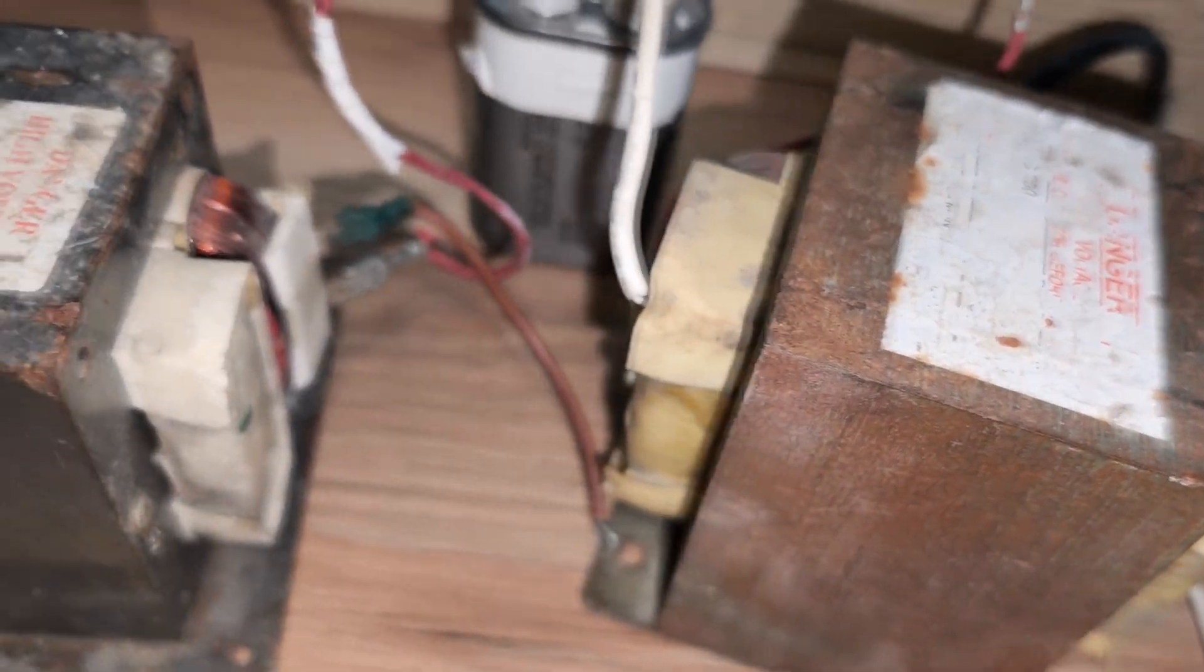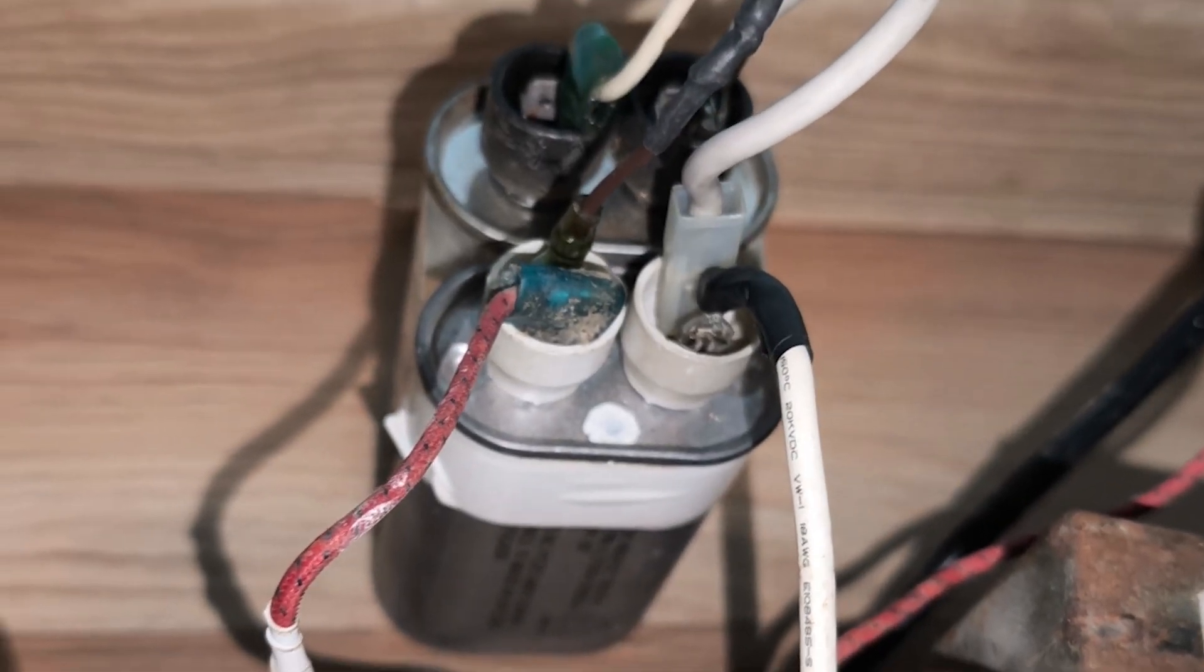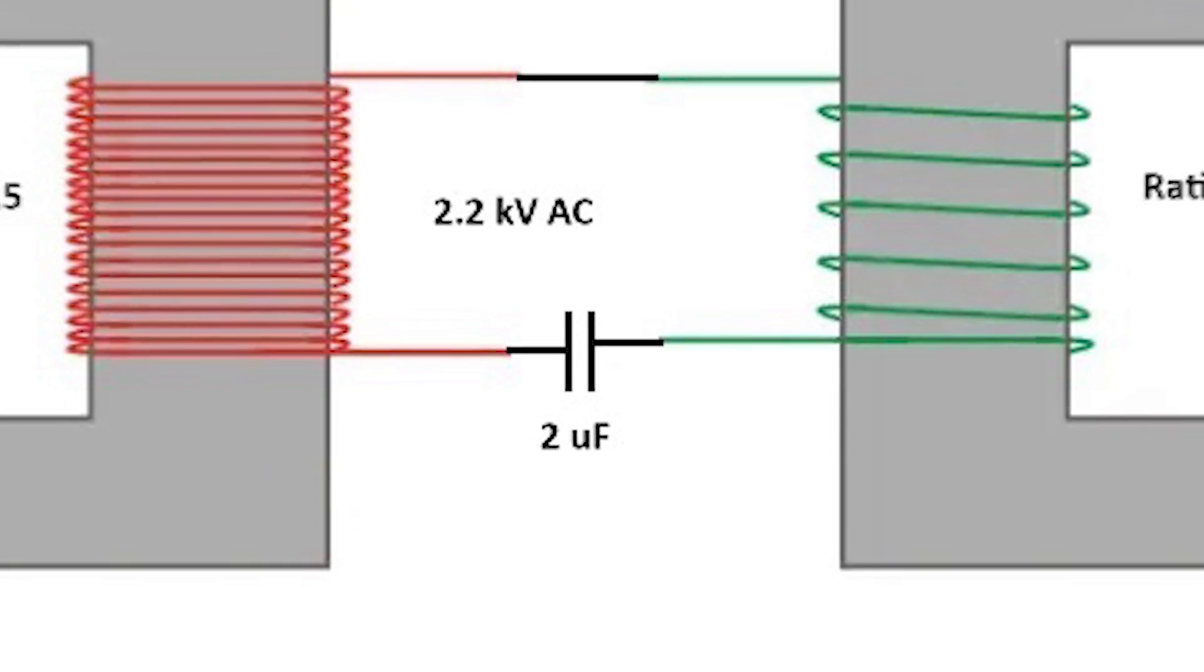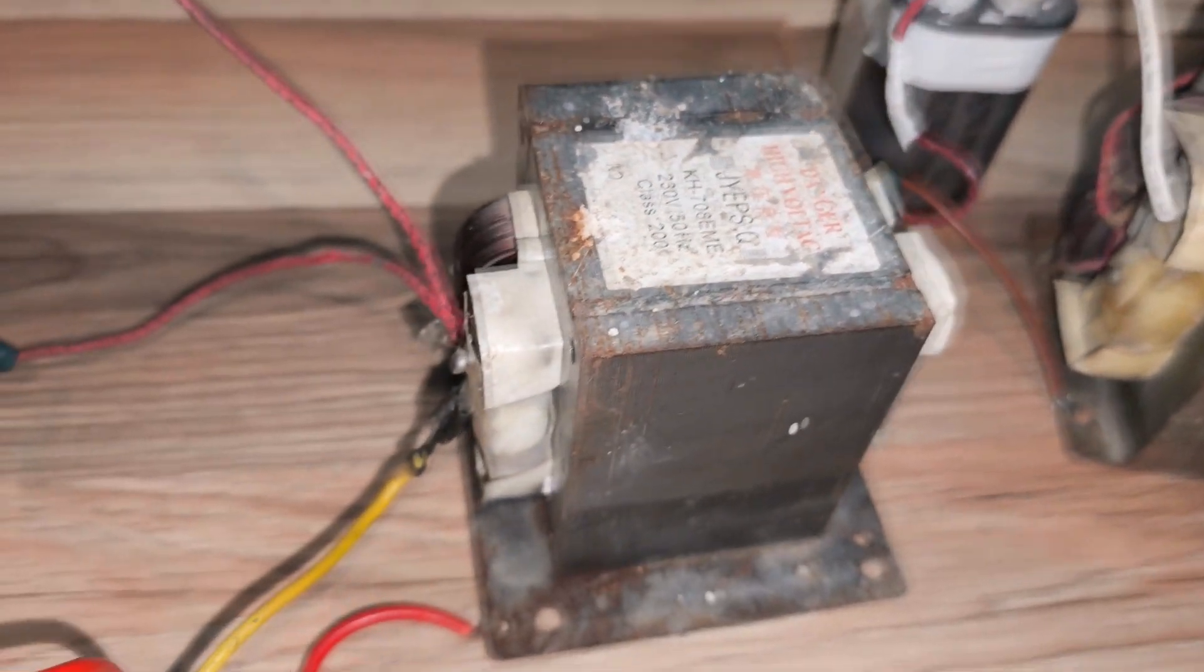Here I am using a 2 microfarad capacitor bank between the secondary output of the first transformer and the primary input of the second transformer, in order to achieve resonance and limit currents by correcting the power factor.